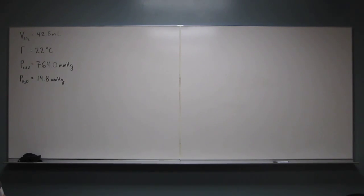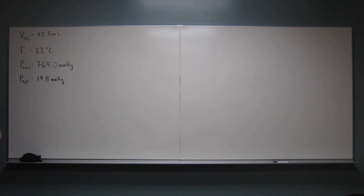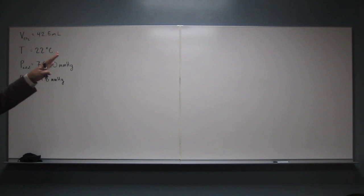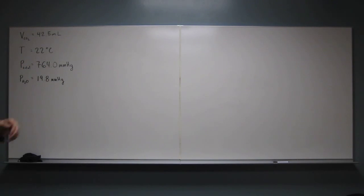If we go look at the table, we see that at 22 degrees Celsius, water's partial pressure is 19.8 mmHg. So from that, we're going to have to figure out what's the partial pressure of the carbon dioxide gas to do anything.